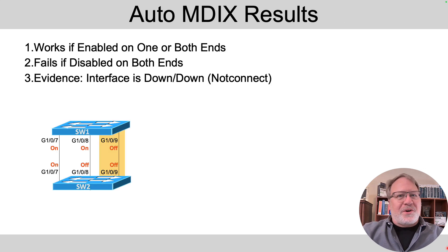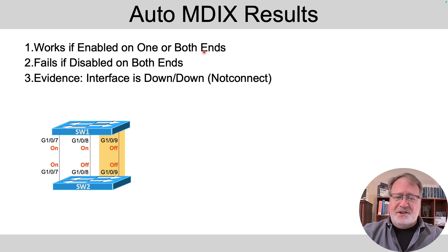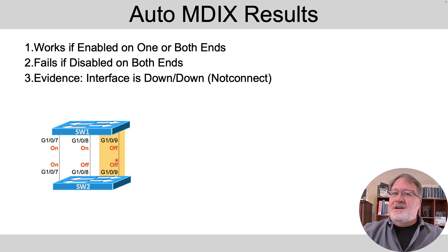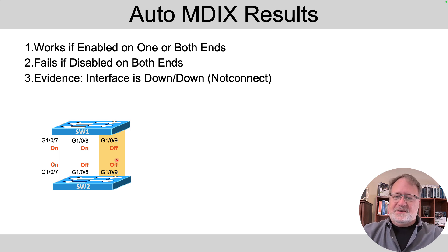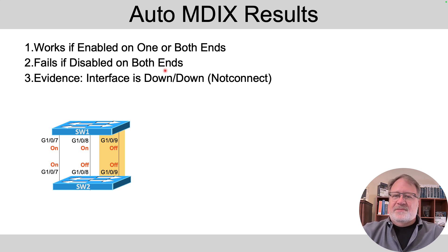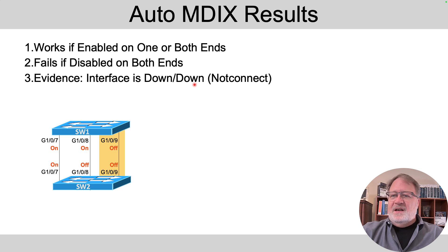How do we implement this? It's on by default and works well, so in real life you could mostly ignore it, but for exam prep let's talk through it. The function works if it's enabled on at least one end — one end or both ends. I've made three examples using two switches with ports 7, 8, and 9 connected. Port 9 has AutoMDIX turned off on both ends using straight-through cables to test the feature. Only when it's turned off on both ends will the link fail. The show interfaces command will show the interface in a down/down state with the single-word code 'notconnect'.